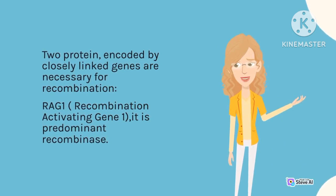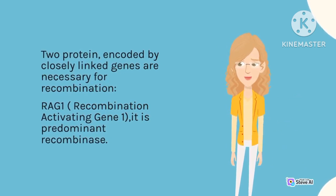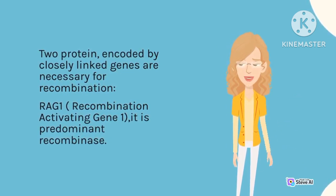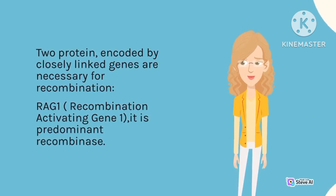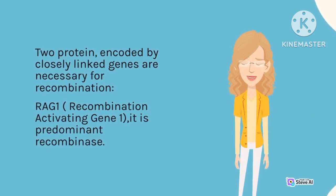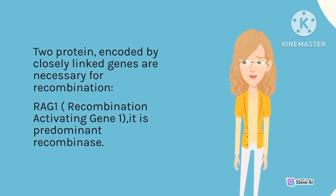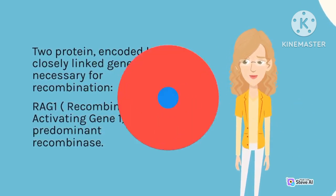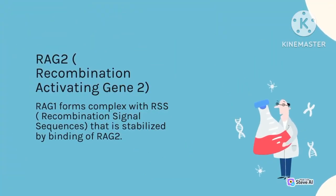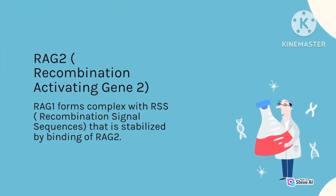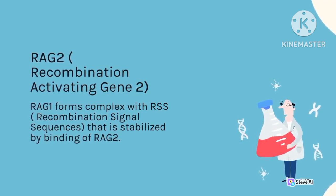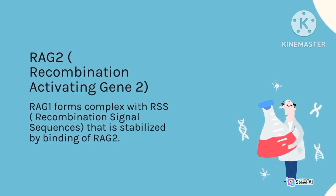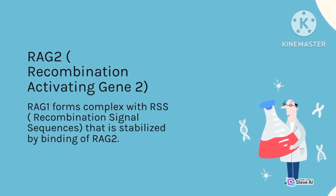Two proteins encoded by closely linked genes are necessary for recombination. RAG1 (recombination activating gene 1) is the predominant recombinase. RAG2 (recombination activating gene 2) — RAG1 forms a complex with RSS (recombination signal sequences) that is stabilized by the binding of RAG2.